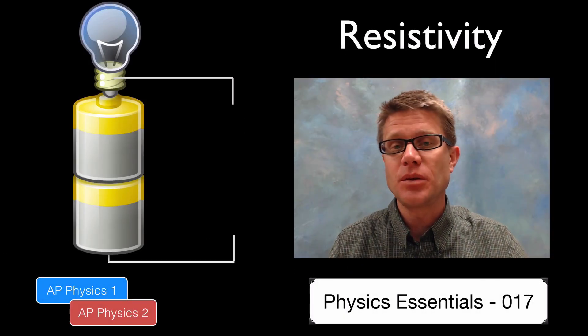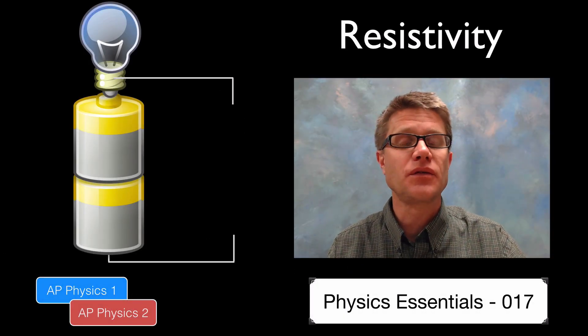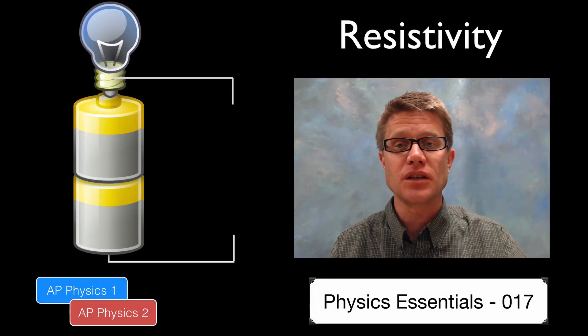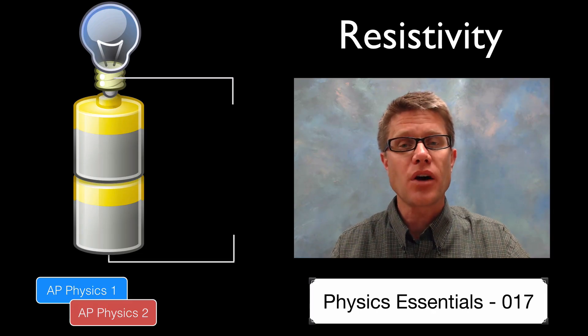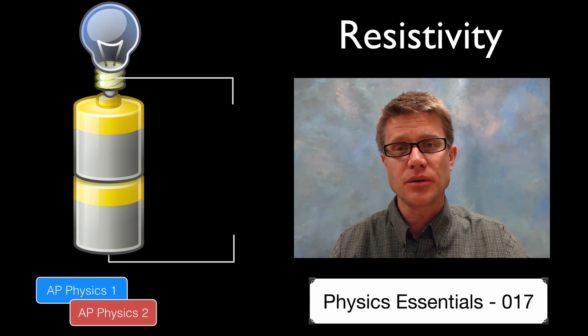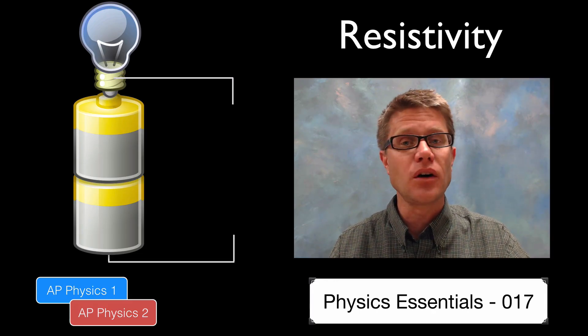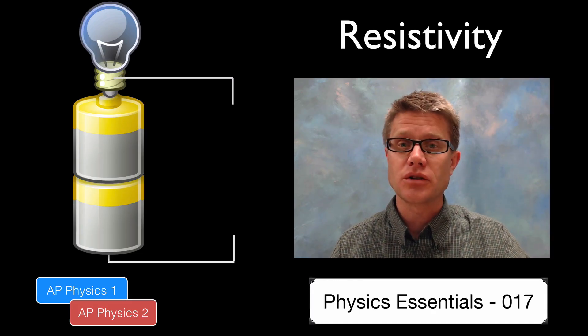Hi. It's Mr. Andersen and this is AP Physics Essentials video 17. It's on resistivity, which is the property of material that opposes flow of charge.